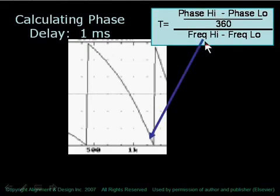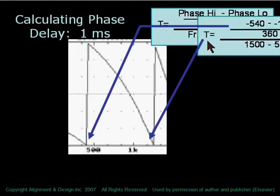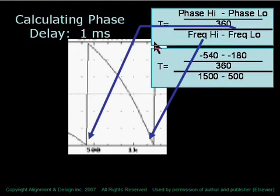So here's our values. Frequency high is 1500. The frequency low is 500. Those give us phase values of 540 and 180, respectively.